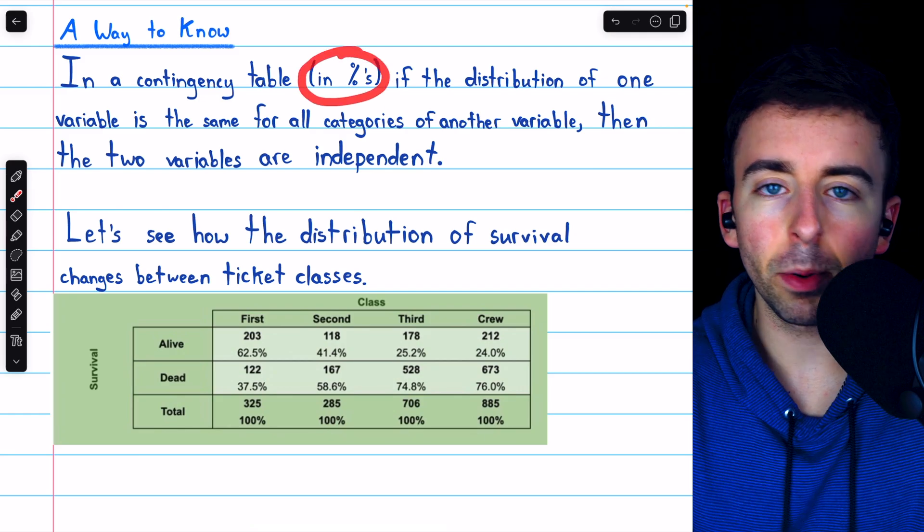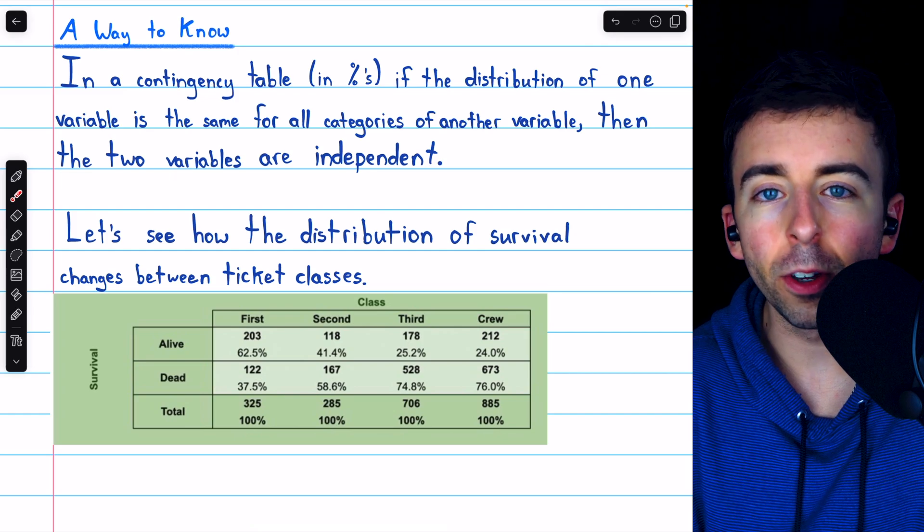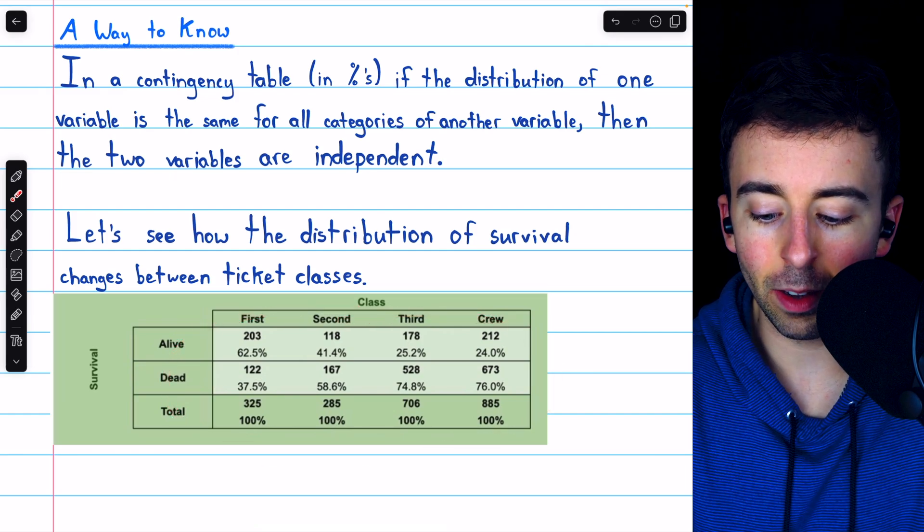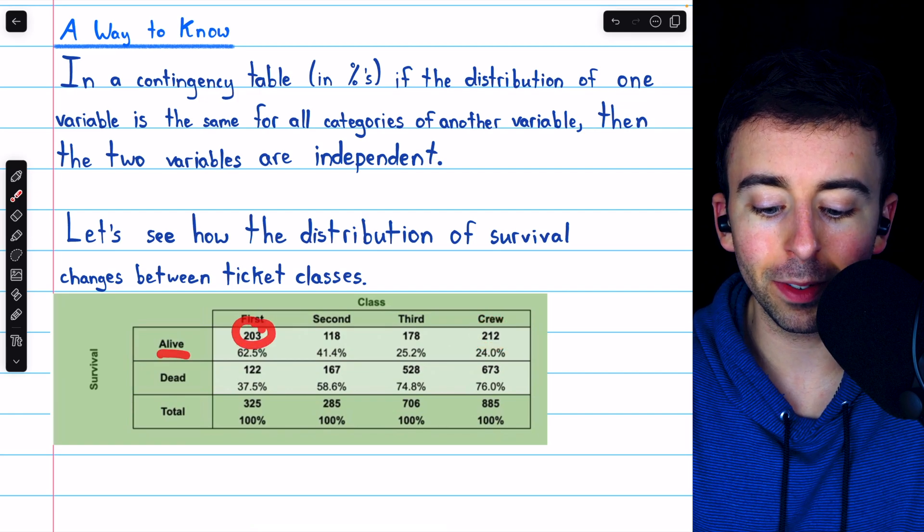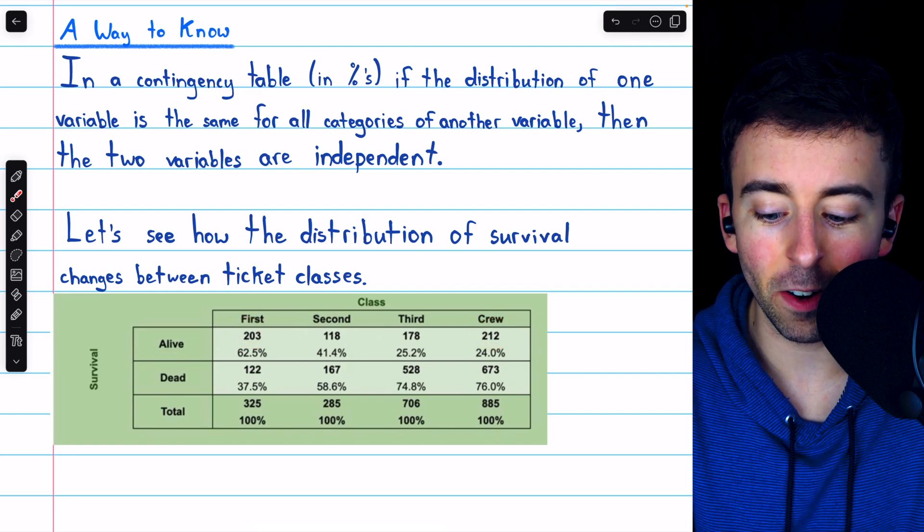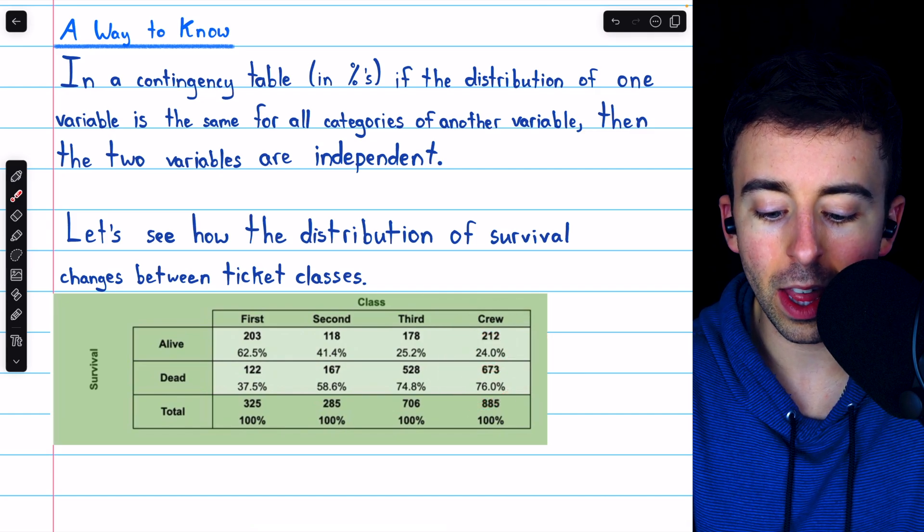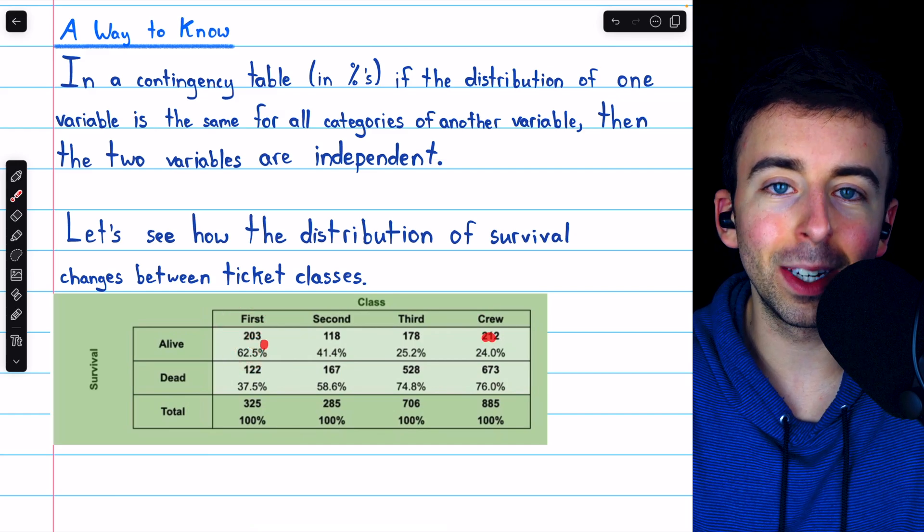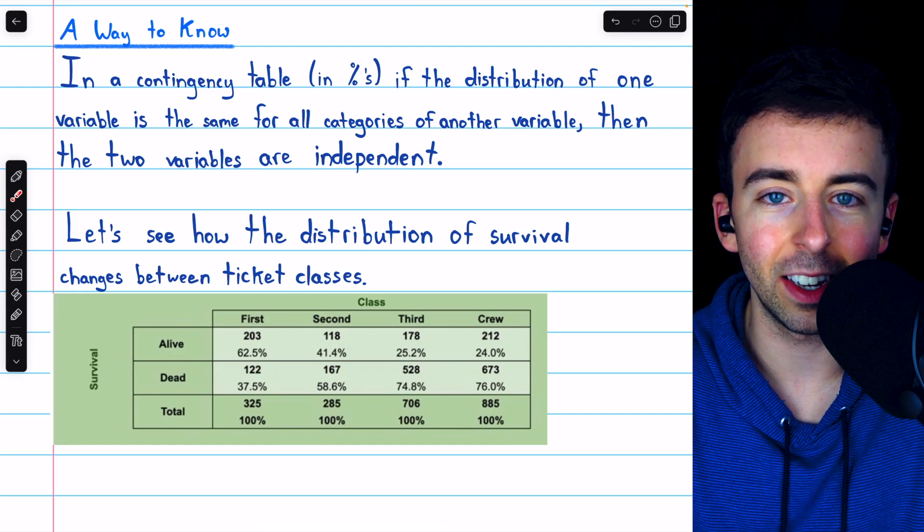Now why do we have to look at percents to accurately answer questions about association? Well the raw counts can be deceiving. Just looking at this table, you can see that more crew members survived than first class members. But since we have the percents here, we can see that you were way less likely to survive if you were in the crew than if you were in the first class. So those raw counts, definitely deceiving. You've got to make sure you're calculating relative frequencies here.